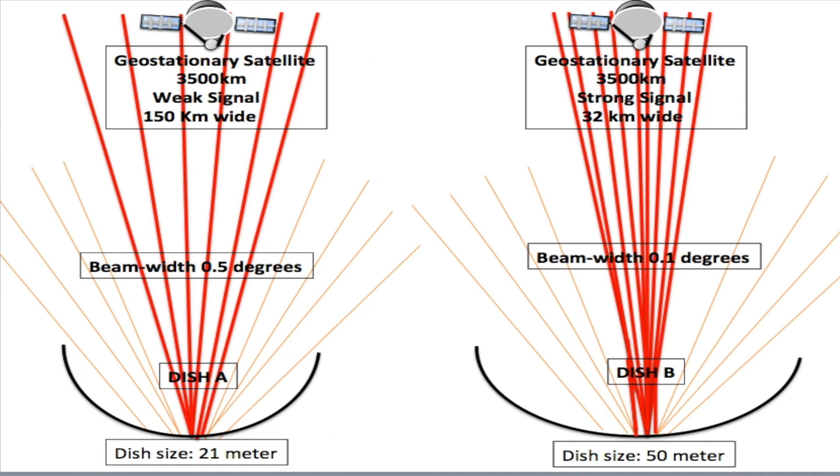I'm going to use this diagram here to explain the meaning of beam width. I have two satellite dishes, dish A and dish B. The size of dish A is 21 meters and the size of dish B is 50 meters. Dish A has a beam width of 0.5 degrees.